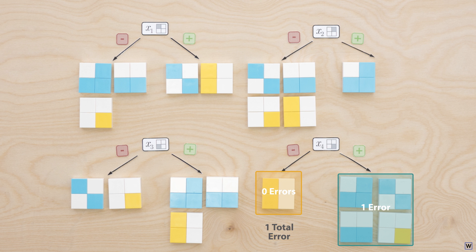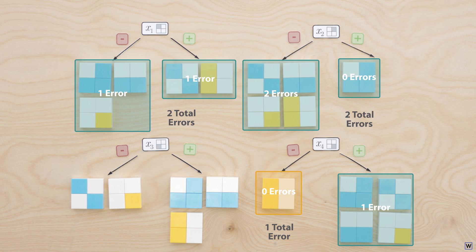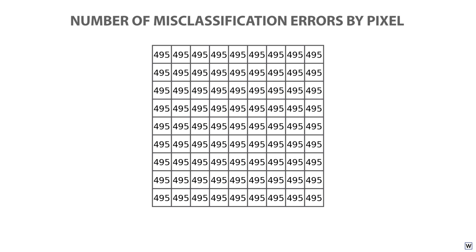And remember that the whole purpose of counting up the number of misclassification errors after splitting on each pixel is to figure out which pixel to split on. So either all pixels are equally bad choices, which seems unlikely, or our method of choosing pixels is flawed.